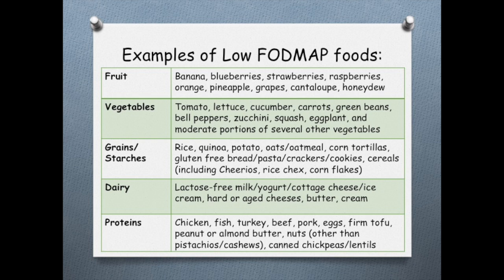Wondering what you can eat? Here are some examples. FODMAPs have a gradual and cumulative impact on symptoms, so small amounts may be tolerated fine, but large quantities throughout the day may surpass your threshold and can trigger symptoms. The best approach to see if you are sensitive to these foods is to eliminate them from your diet for two to four weeks and see if your symptoms improve. The next step is to reintroduce the high FODMAP foods back into your diet one at a time and find out which ones cause symptoms so that you know which foods you should limit or avoid.